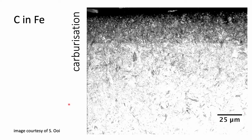We can take advantage of the rapid diffusion of carbon in iron. For example, we can allow carbon to diffuse into the surface of iron from a gaseous atmosphere — the dark region visible is where the carbon has penetrated into the solid. Carbon hardens steel, so we want very high hardness on the surface but not in the core of the component, because we want the core to have toughness and ability to absorb impact while the surface provides wear resistance.